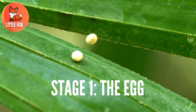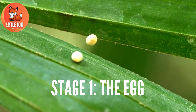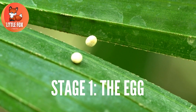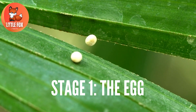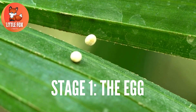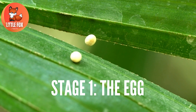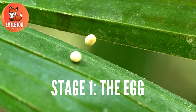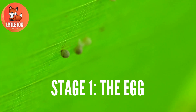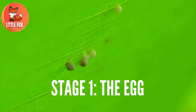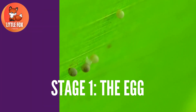Stage 1: The Egg. A butterfly lays its eggs on a leaf. Inside the egg, a tiny caterpillar, or larva, develops. It feeds on the nutrients stored within the eggshell until it's ready to hatch.